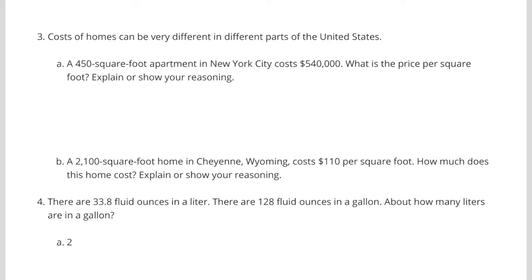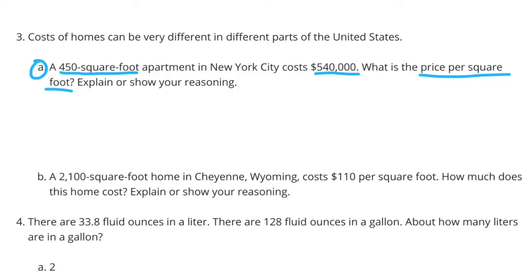Number 3: Cost of homes can be very different in different parts of the United States. A: A 450 square foot apartment in New York City costs $540,000. What is the price per square foot?